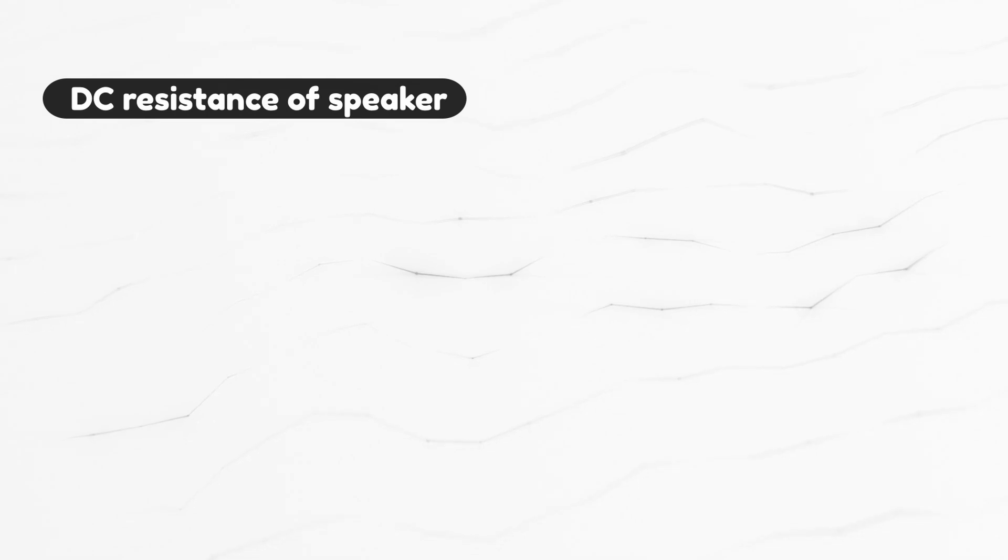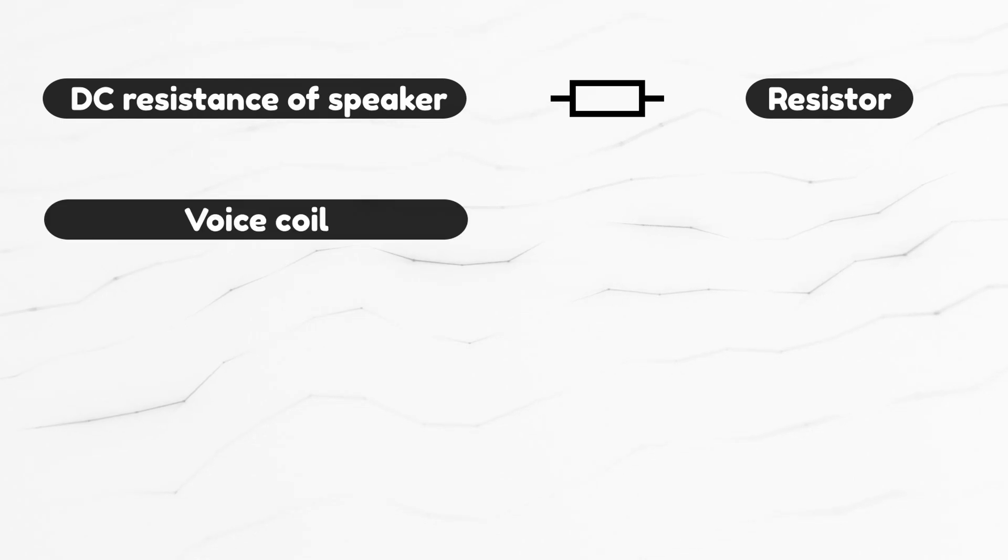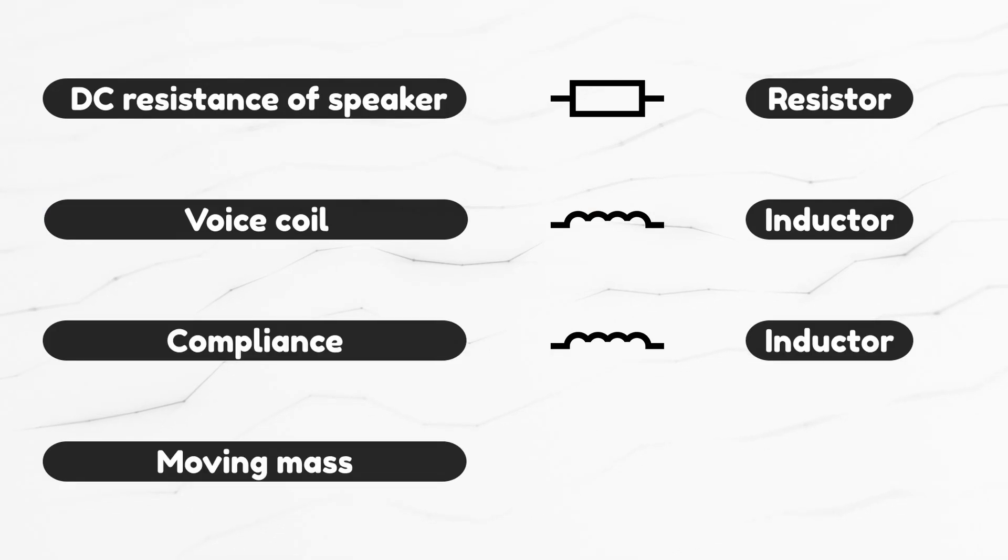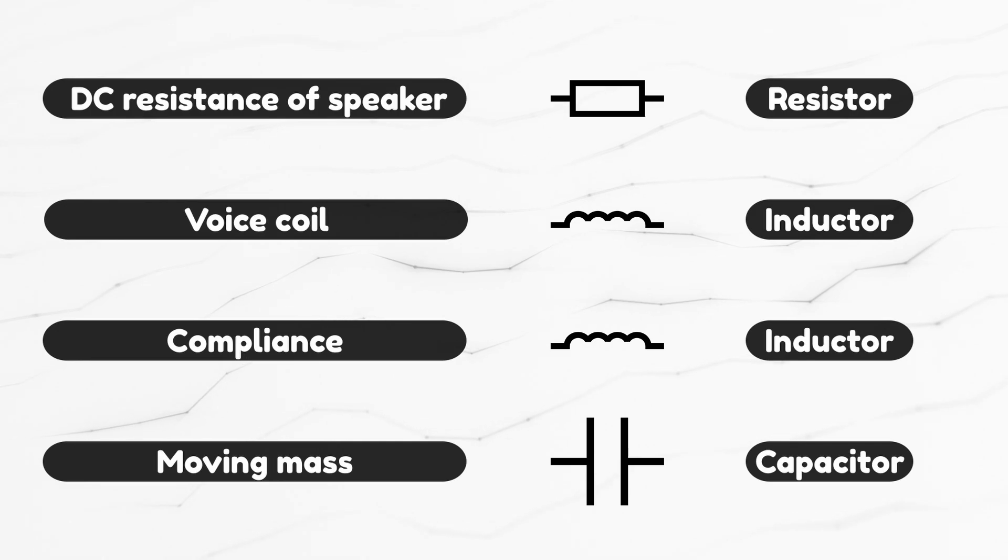We have RE, which is the DC resistance of the speaker. This is obviously a resistor in the electrical circuit. A speaker has a voice coil, which is obviously an inductor. While the electrical parameters are obvious, the mechanical ones are not. But anyway, the compliance is an inductor, for example, and moving mass is a capacitor in the speaker equivalent circuit.